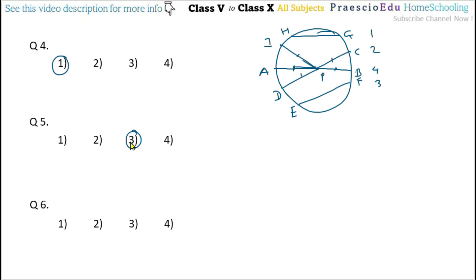Question number six: what is the point of intersection of all the diameters in a circle called? All diameters always pass through the center of the circle, so the intersection point of all diameters is the center of the circle. Option number two — center — is the correct answer.